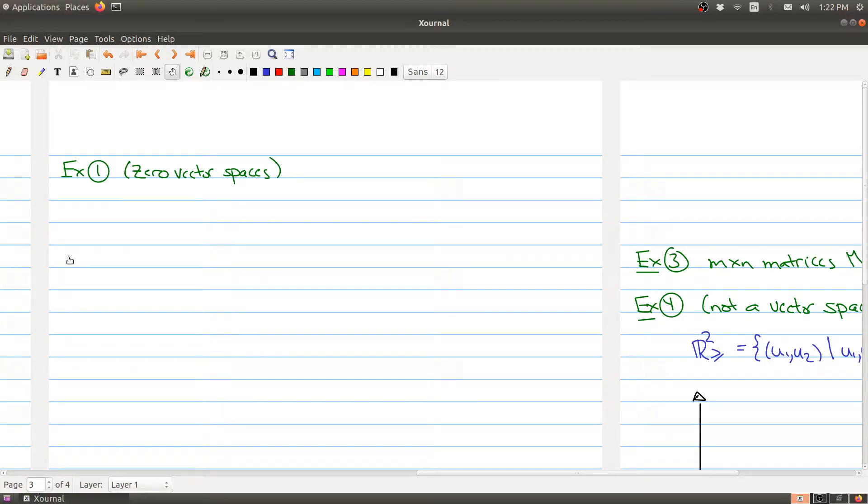In the first part of the lecture we introduced the definition of a vector space, and as I said, Rn is an example of a vector space. So the question is, what other things are vector spaces?